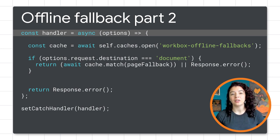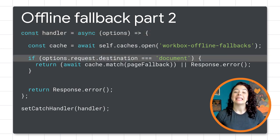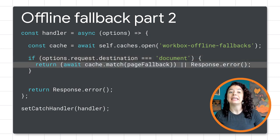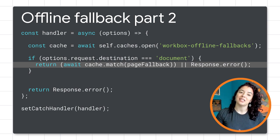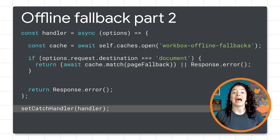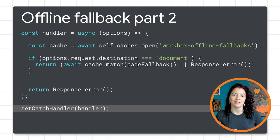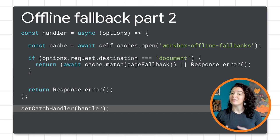Next, we create an object called a handler. This handler checks if the app is requesting a document, because if the request that failed was for a document, it is then that we want to respond with our fallback page instead. This handler will only run if there is an error making a request. That is what the set catch handler line does — it tells the service worker to use this handler if it errors on the request.